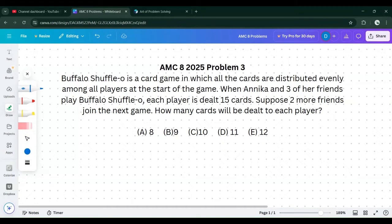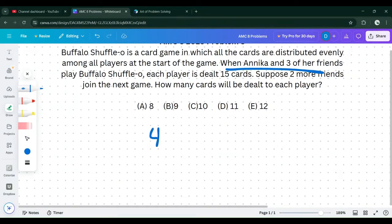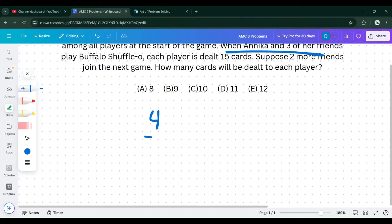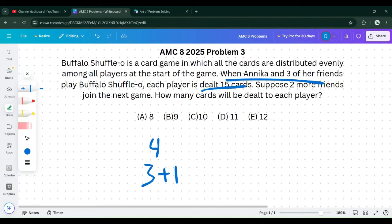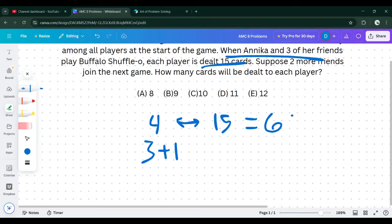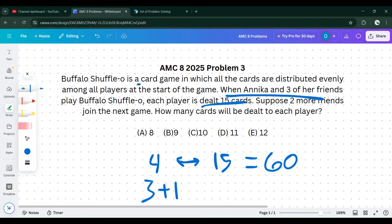We're going to start by analyzing the problem. When Anika and three of her friends, that means there's four players in the card game. Each player is dealt 15 cards and they're distributed evenly. So each player has 15 cards. That means there's 60 cards in total, which means this card game has 60 cards that can be dealt to the players.